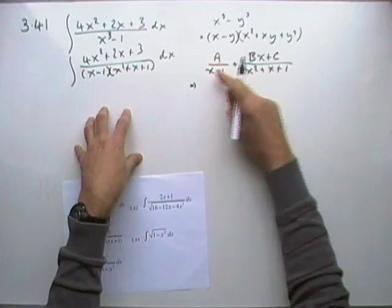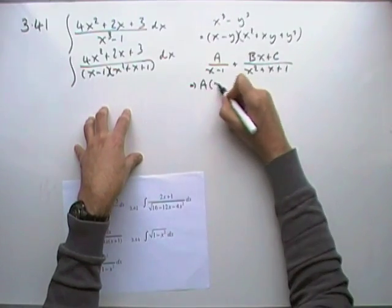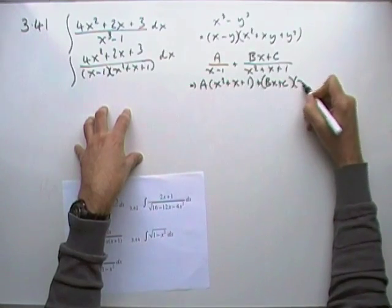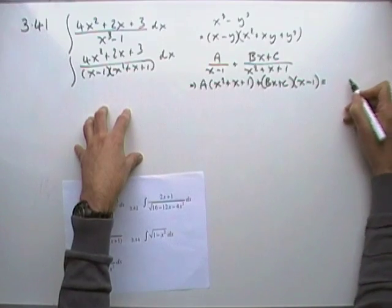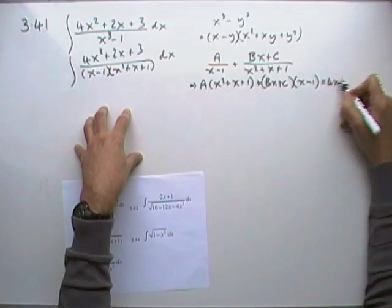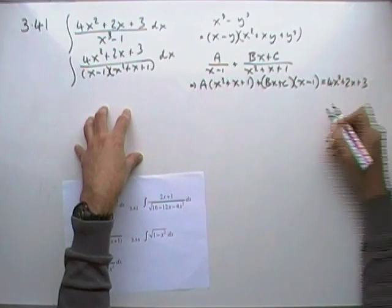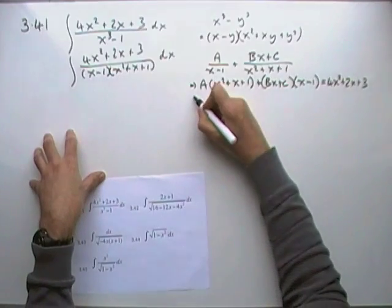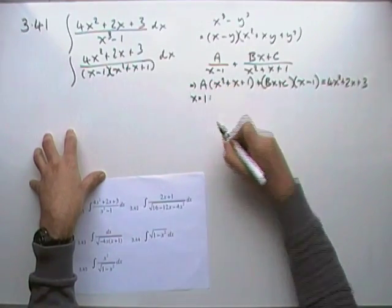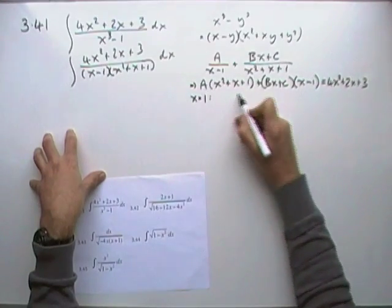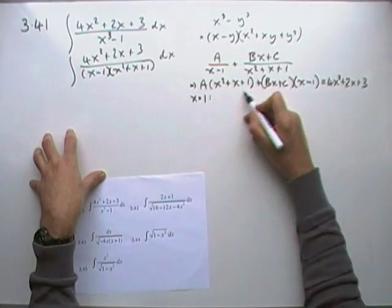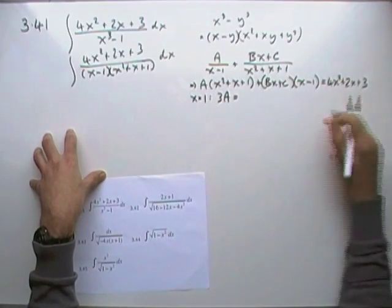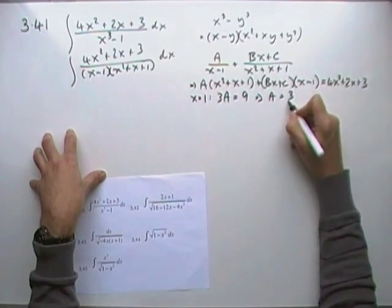Multiplying it out, I'll have A times x squared plus x plus 1 plus Bx plus C times x minus 1 equal to 4x squared plus 2x plus 3. Now it's just a case of equating the two parts. I'll use a knockout value first of all. If x equals 1, that simplifies it: this part disappears and this part's going to be 3A, and that will equal 4 plus 2 plus 3 is 9. Which means A equals 3.